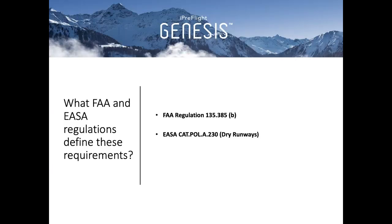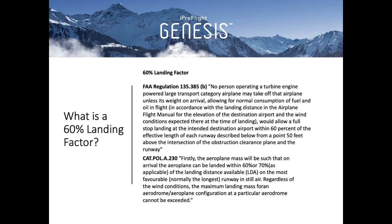What FAA and EASA regulations define these landing factor requirements? You can find the landing factor requirements in FAA Regulation 135.385 Bravo and EASA CAT.POL.A.230 for dry, and CAT.POL.A.235 for wet contaminated. The FAA says no person operating a turbine engine powered large transport category airplane may take off that airplane unless its weight on arrival, allowing for normal consumption of fuel and oil in flight, in accordance with the landing distance in the airplane flight manual for the elevation of the destination airport and the wind conditions expected there at the time of landing, would allow a full stop landing at the intended destination airport within 60% of the effective length of each runway, from a point 50 feet above the intersection of the obstruction clearance plane and the runway.